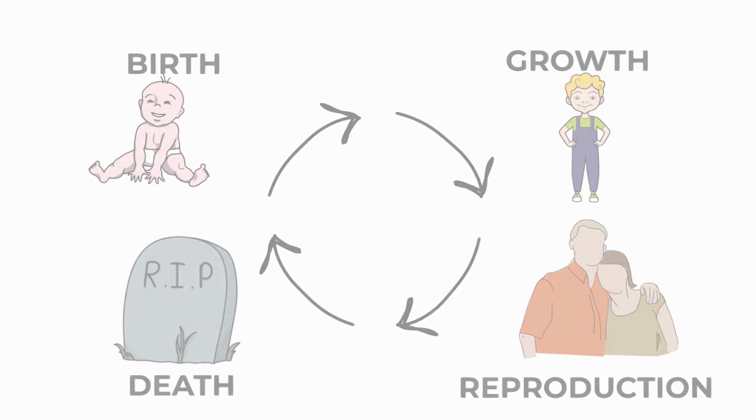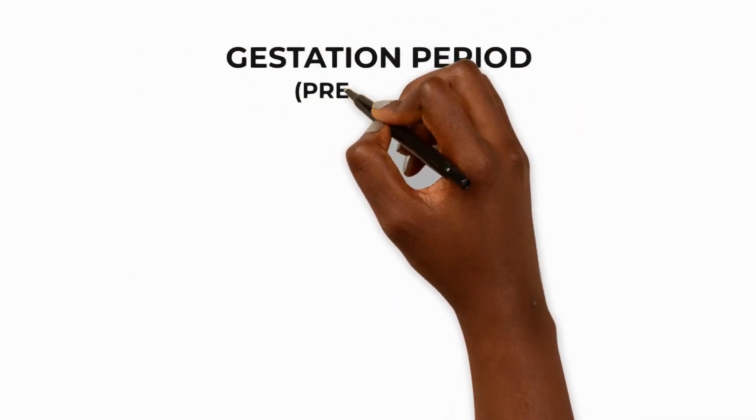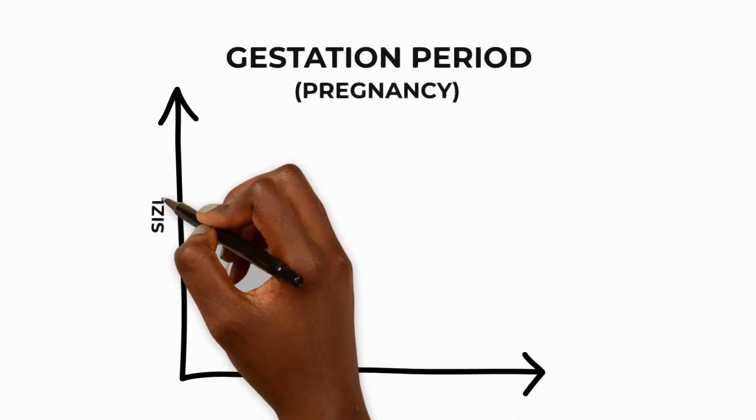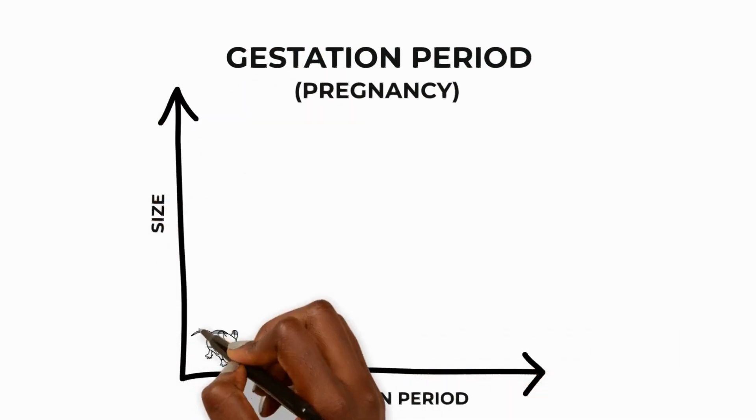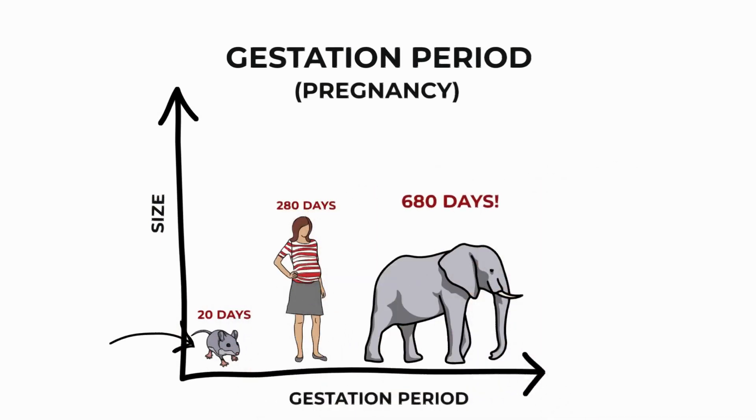The time before a mammal is born is called the gestation period or pregnancy. Animals with a bigger mass and larger size have longer gestation periods than smaller animals. Nearly all mammals give birth to live young. Other types of animals usually lay eggs. There are a few exceptions though.